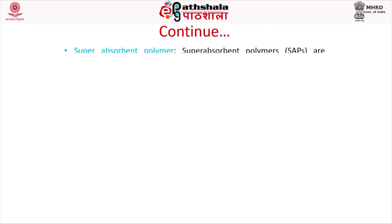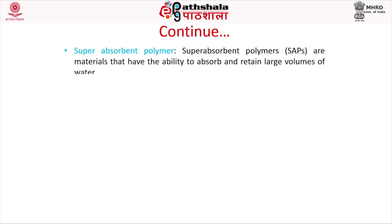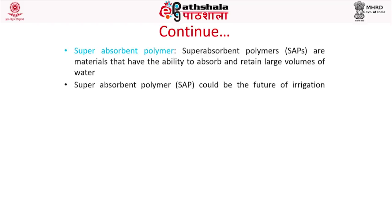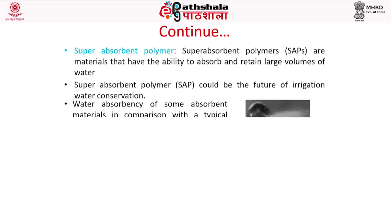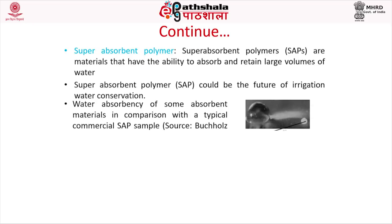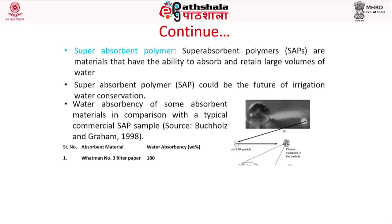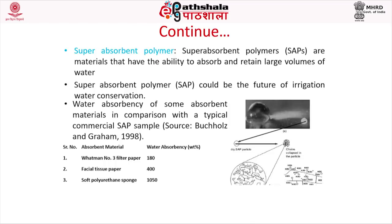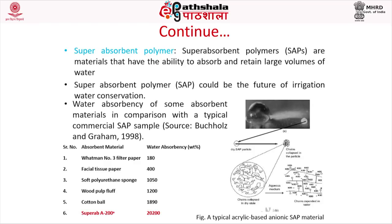Super absorbent polymers (SAP) are materials that can absorb and retain large volumes of water and could be the future of irrigation water conservation. For comparison of water absorbency: Whatman filter paper No. 3 has 180% absorbency, facial tissue paper 400%, soft polyurethane sponge 1050%, wood pulp fluff 1200%, cotton ball 1890%, and Super AB A200 has 20,200% water absorbency.